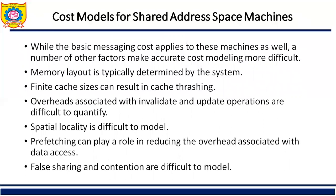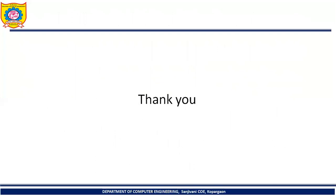In this article, we learned about the communication cost of message passing in parallel machines. There are three basic protocols: first, store-and-forward; second, packet routing; and third, cut-through routing. Startup time ts, per-hop time th, and per-word time tw are the very important factors for calculating the total communication time required to pass a message in a parallel machine. This is the end of this article. Thank you very much.